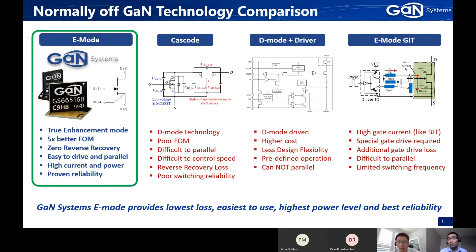The last type of technology is E-Mode GIT — Gate Injection Transistor. It is E-Mode, but it requires a very high gate current to turn the device on, so it really works like a bipolar transistor or BJT. You need a special gate driver and will have additional gate drive losses. It's also difficult to parallel GIT devices because you cannot guarantee even gate current into each device. Because of this high gate drive current and losses, it also limits your switching speed and frequency — you can't really do megahertz switching with E-Mode GIT.